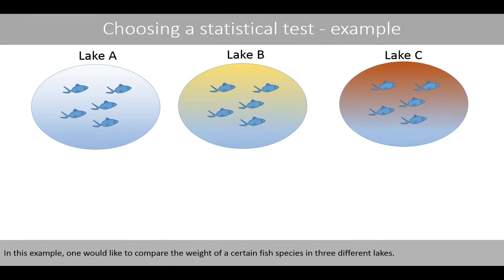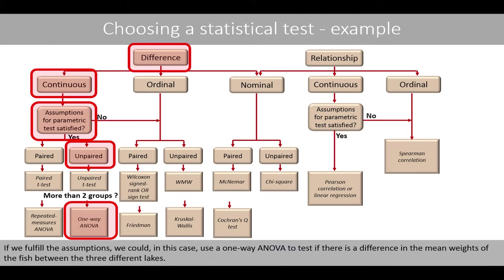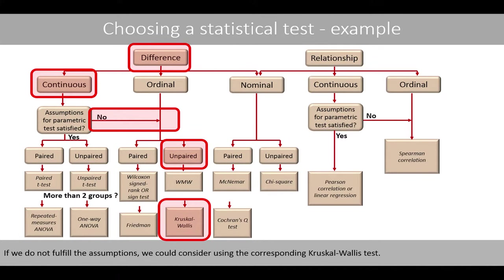In this example, one would like to compare the weight of a certain fish species in three different lakes. We'd like to compare the difference in weight, which is on continuous scale, between three independent groups. If we fulfill the assumptions, we could use a one-way ANOVA to test if there is a difference in mean weights of the fish between the three different lakes. If we do not fulfill the assumptions, we could consider using the Kruskal–Wallis test.